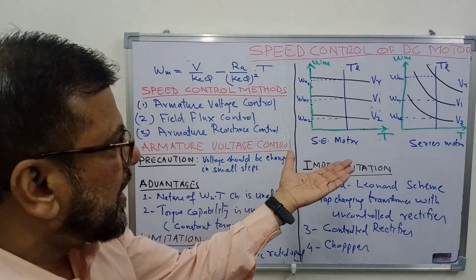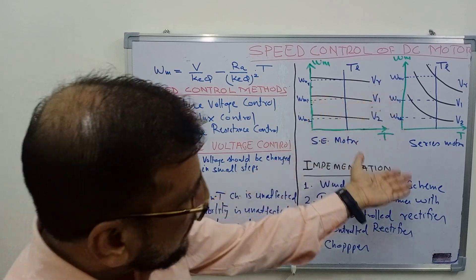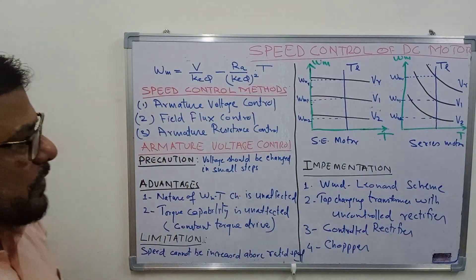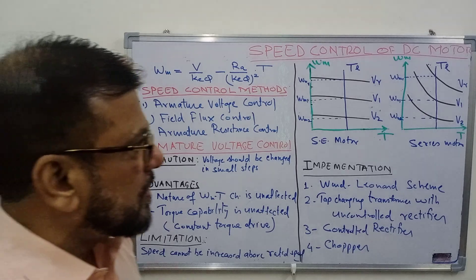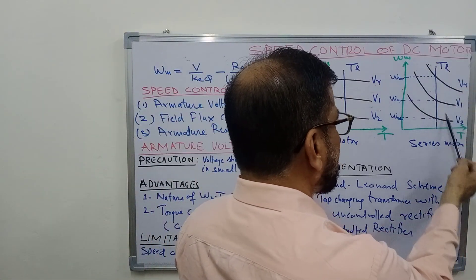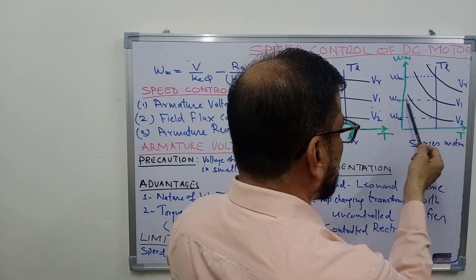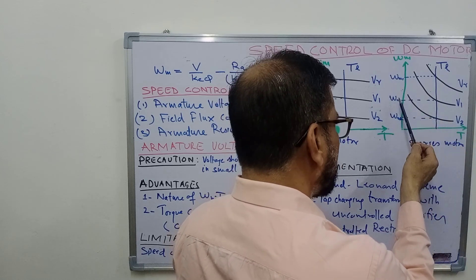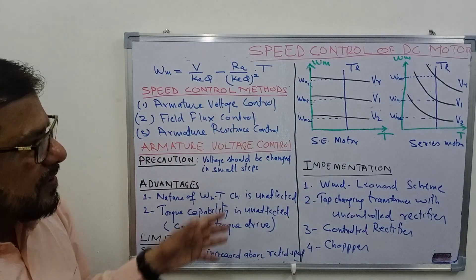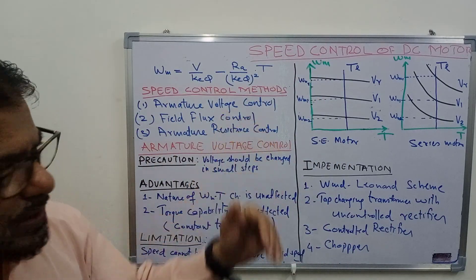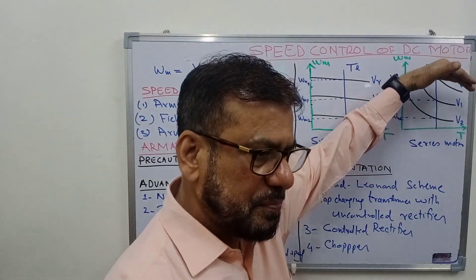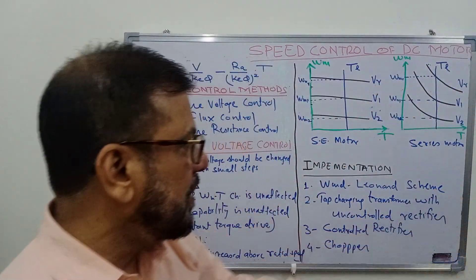This is armature voltage control. Similarly, in the case of the series motor, if you vary the voltage across the armature, the characteristic shifts downward and the speed changes from ωmR to ωm1 to ωm2. In this way you can control the speed over the whole range from rated speed down to a very low speed.